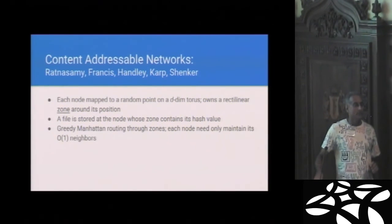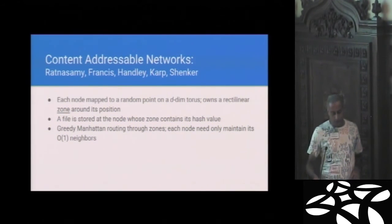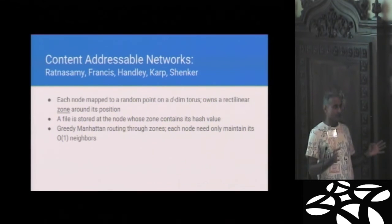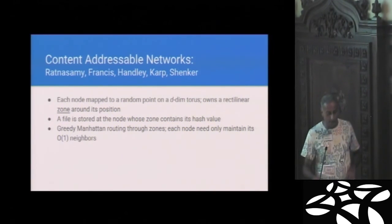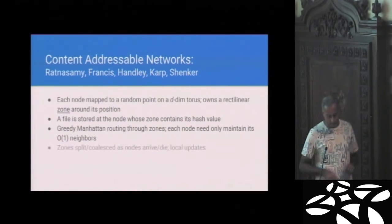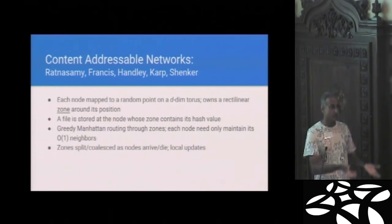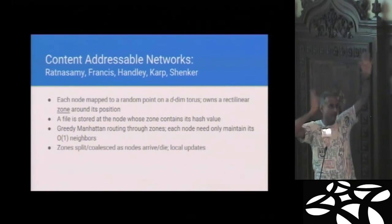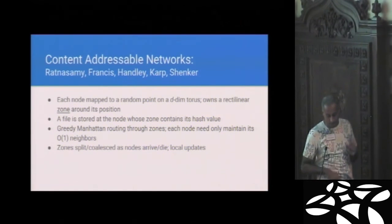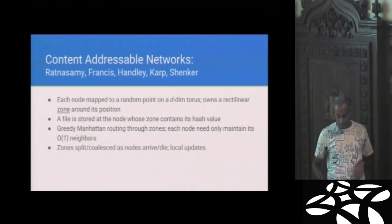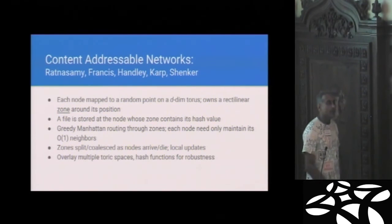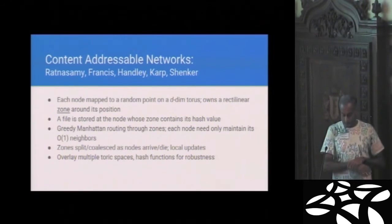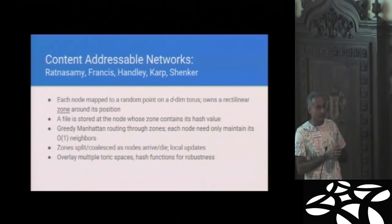When you want to access a file, you do essentially a greedy Manhattan routing on the torus through these zones. And what's nice about this is that every node need only maintain a constant number of neighbors. The way they set up zones can be done so that only everybody has only a small number of neighbors. Now zones will sometimes be split because if you add new servers, for instance, a new server gets hashed into a zone belonging to another server, then they divvy up that space into two subspaces. And if you do the divvying up carefully, you maintain the constant neighborhood property. And you have to update the routing tables only locally and so on. Now, if you then want to make this highly reliable and available, what you actually do is you overlay multiple toric spaces. So you don't have only one torus. You have multiple hash functions and you get a very robust large scale system for distributing data.